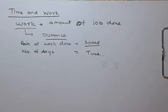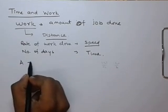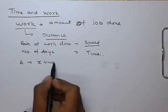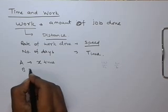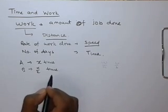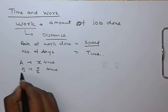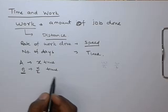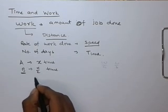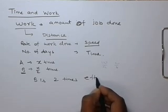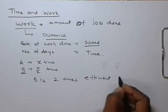One thing we need to understand about time and work: if person A is taking X time to do the work, and another person B is taking X/2 time to do the work, then we can say that person B is two times more efficient than person A.